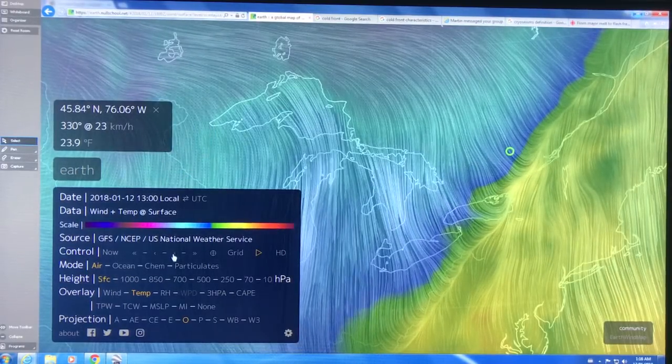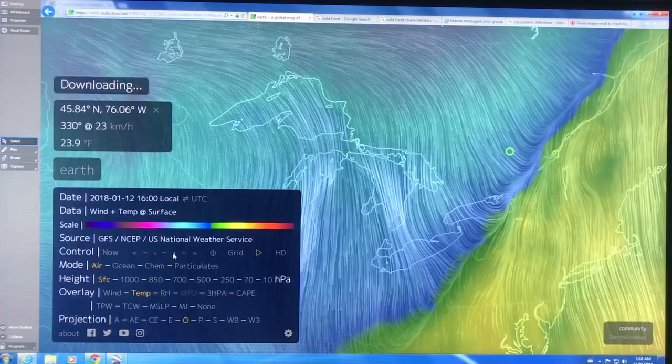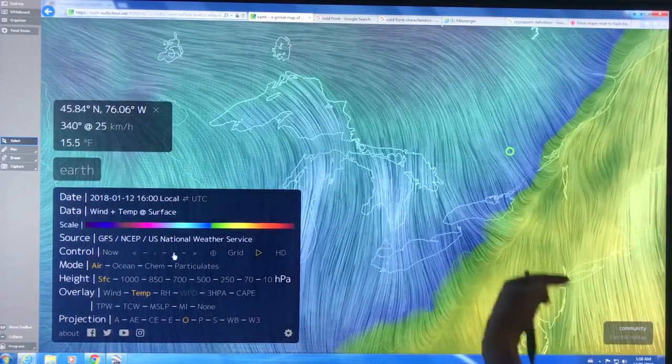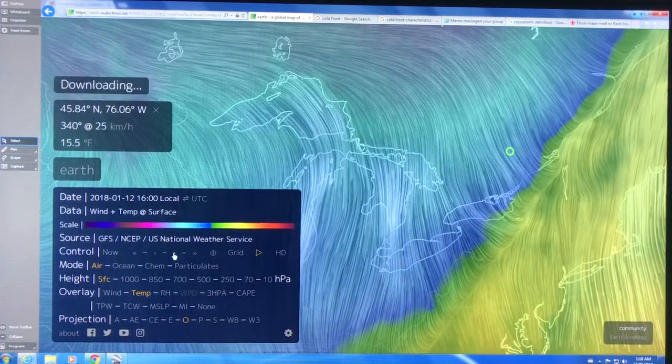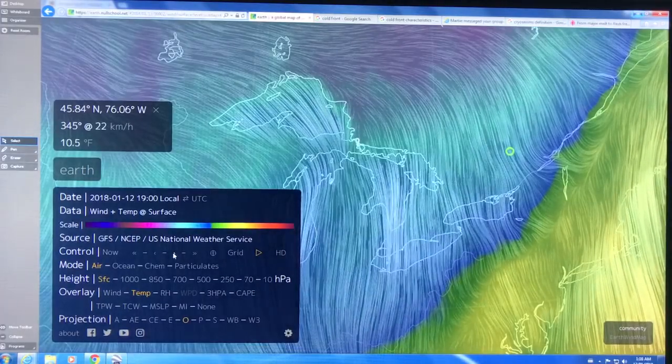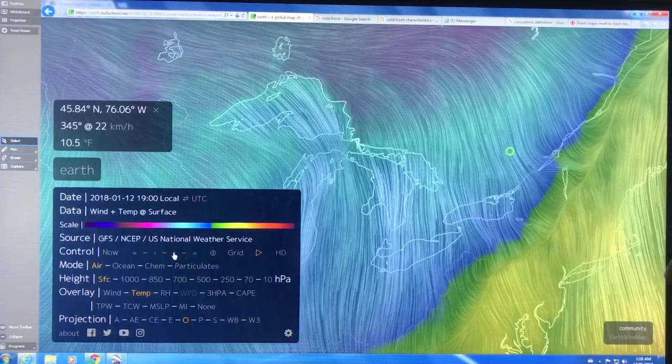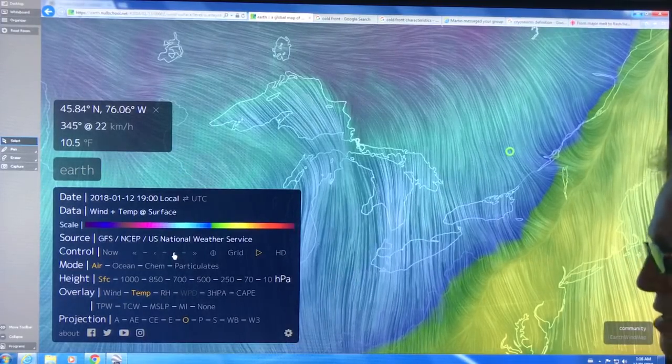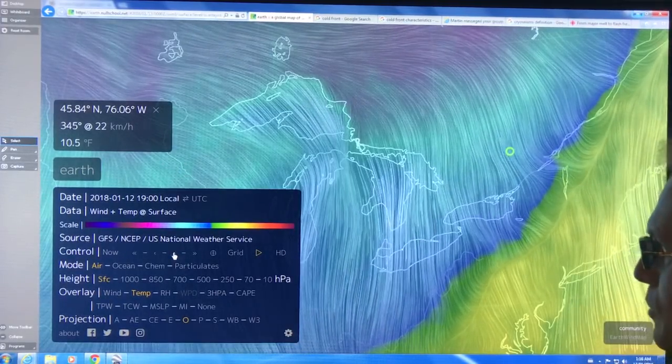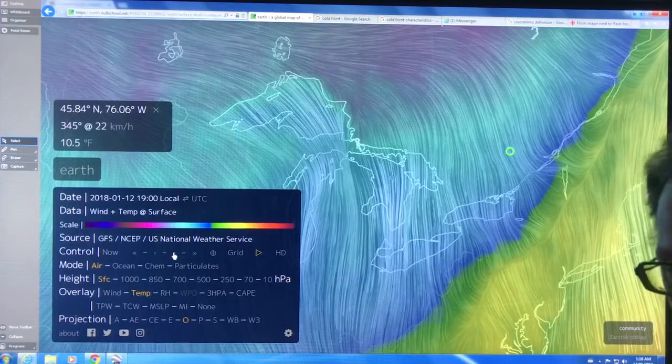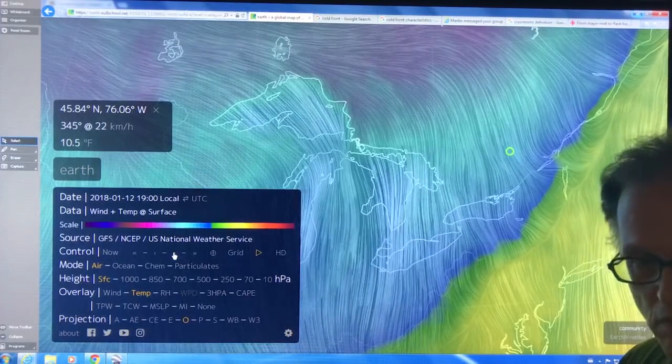Let's proceed here and what you can see is as the cold front is moving further and further down, each region along this line experiences those very rapid temperature changes. When the temperature changes are extremely large we call it basically a flash freeze.